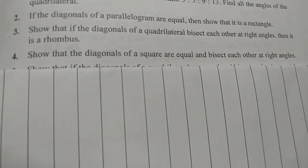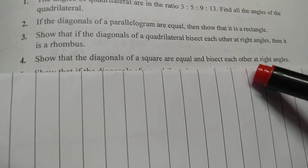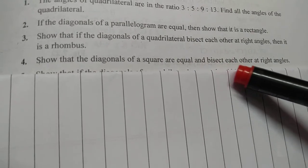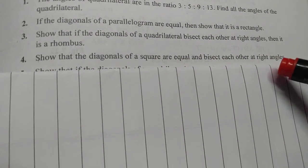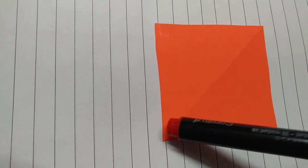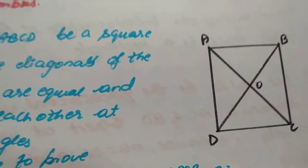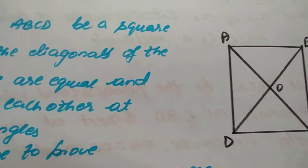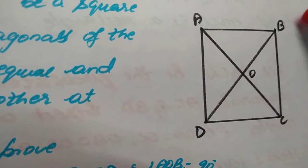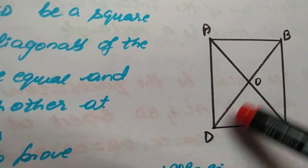Now coming to the fourth question. You have to prove that in a square, the diagonals are equal and bisect each other at right angles. First, you have to prove the diagonals are equal and they bisect at right angles, meaning at the midpoint all the angles are 90 degrees. I am taking my square as ABCD where the diagonals intersect at point O. I have to prove that AC equal to BD and angles BOD, AOB, BOC and COD are all 90 degrees.